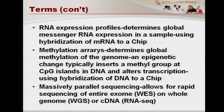RNA expression profiles were one of the first globally used genetic approaches because they could be done quite rapidly. They're used to determine global messenger RNA expression — that's the part that codes for protein in a sample. Typically they use hybridization of messenger RNA to a chip, and that has led to oncotype and these kinds of tumor analyses that are already in use today.